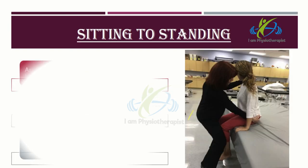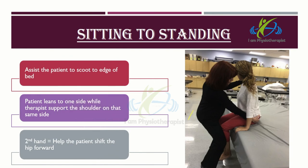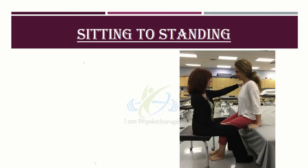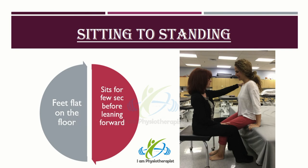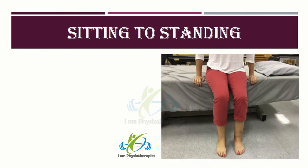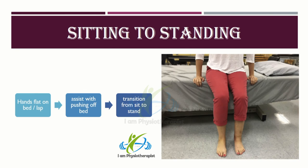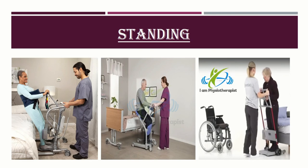Sitting to standing: to help the patient move from a sitting position on the bed to a standing position, first assist the patient to scoot to the edge of the bed. Standing in front of the seated patient, the patient leans to one side while you support the shoulder on that same side. With your other arm, help the patient shift the hip forward. This process is alternately repeated on the opposite side. Make sure the patient's feet are flat on the floor and he or she sits for a few seconds or minutes as needed before leaning forward to be assisted to a standing position. Several assistive devices can be used to assist the patient in standing.